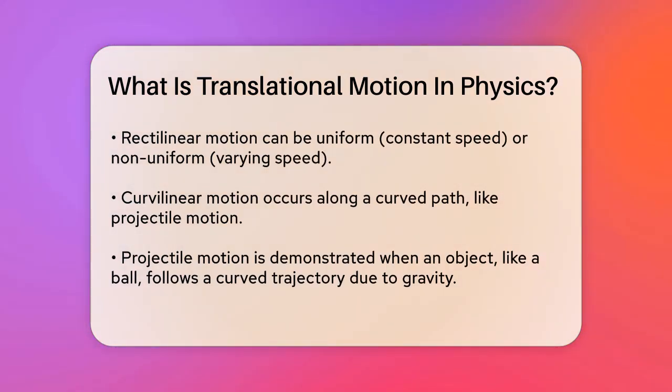On the other hand, curvilinear motion occurs when an object moves in a curved path. A classic example is projectile motion, like when you throw a ball and it follows a curved trajectory under the influence of gravity. This type of motion can happen in two or three dimensions.